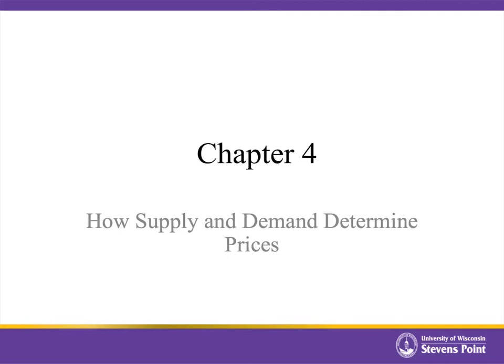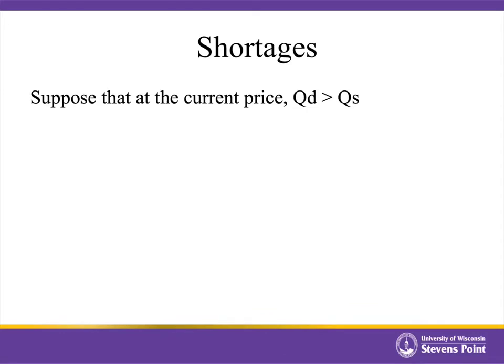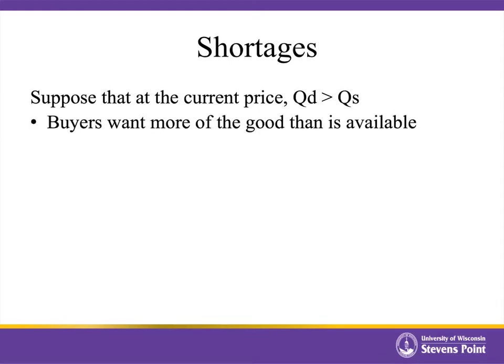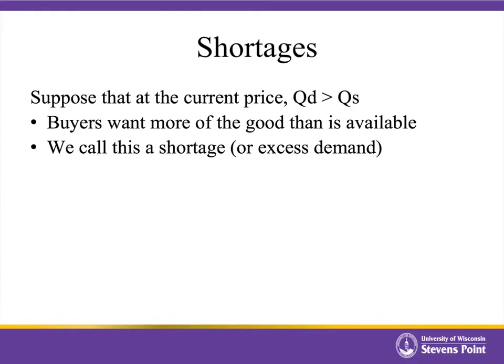In chapter 4, we put supply and demand together to look at how the two forces interact to determine market prices. We're going to start with situations where we have a shortage. Suppose that at the current price, quantity demanded is greater than the quantity supplied. This simply means that buyers want more of the good than there are goods actually available to be purchased. We call this a shortage, or some textbooks refer to it as excess demand.